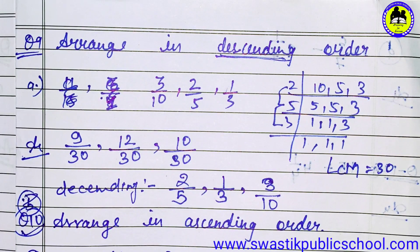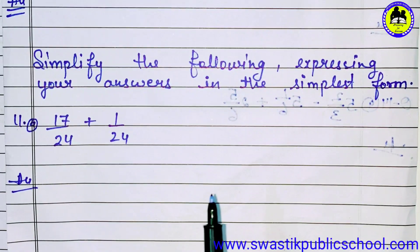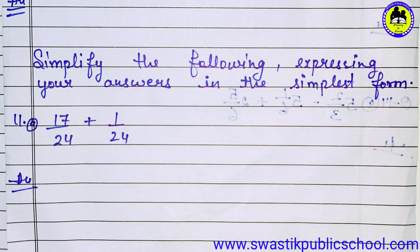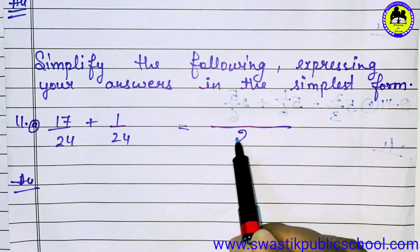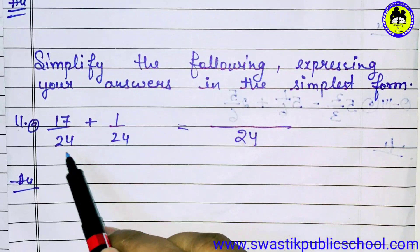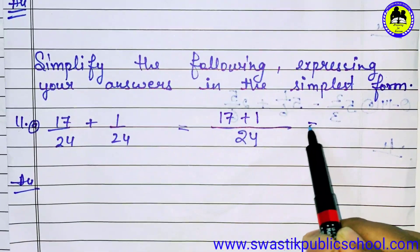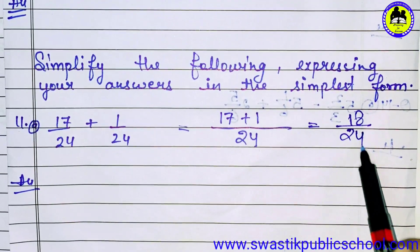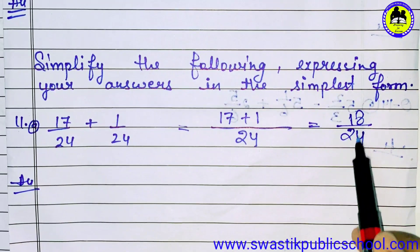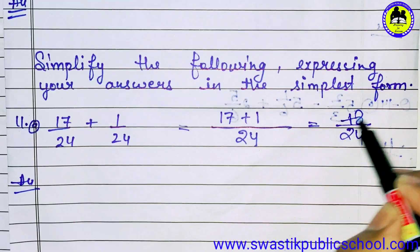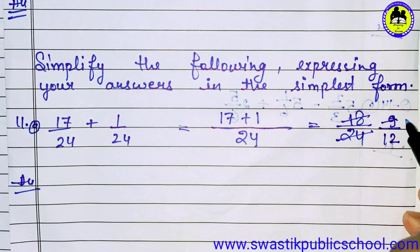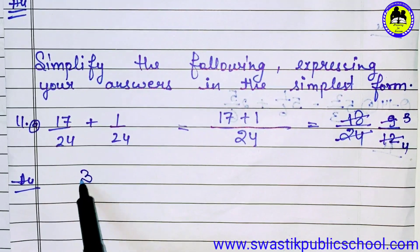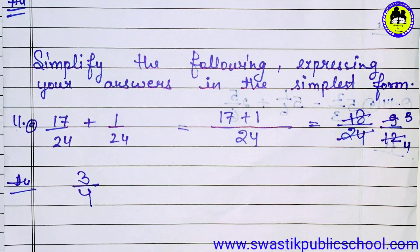Question number 11, part one: simplify the following expression and give your answer in simplest form. We will try to simplify it. The denominator LCM is 24. When the denominator is the same, we simply add: giving 17 upon 24. We check if this can be reduced — 17 does not appear in the 2's table or 9's table or 12's table. However, one answer simplifies: 3's are 9 and 3's are 12, so the answer is 3 upon 4.